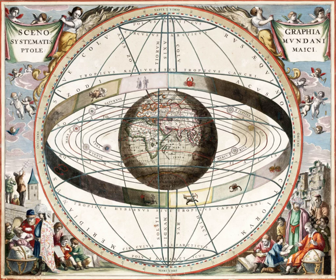Ptolemaic system, replaced by Nicolaus Copernicus heliocentric model. Geocentric universe, made obsolete by Copernicus.